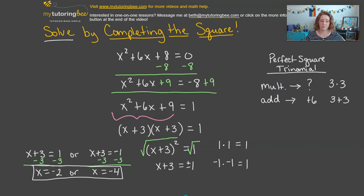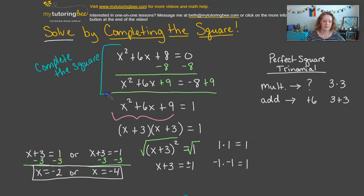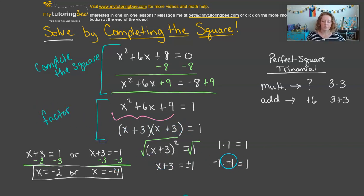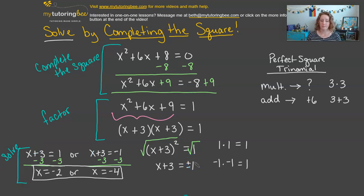Just to recap, the three main steps: first, we completed the square; then we factored; and then we solved. Those are your three main steps when solving using completing the square. Let's try another example.